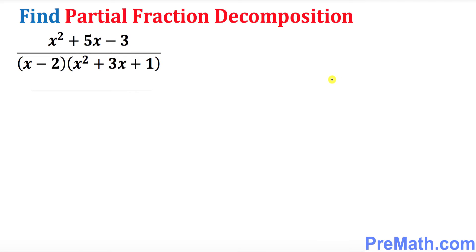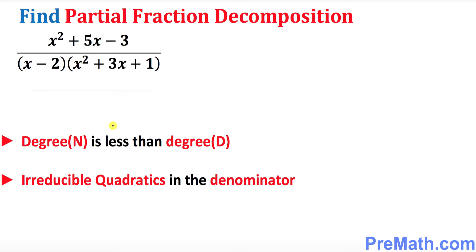Hello again everyone. In this video tutorial we will be finding the partial fraction for this given example. We want to make sure that the degree in the numerator is indeed less than the degree in the denominator. The degree in the numerator is 2 and the degree in the denominator is 3. We also want to make sure that the quadratic part in the denominator is irreducible — that means we cannot factor it anymore.